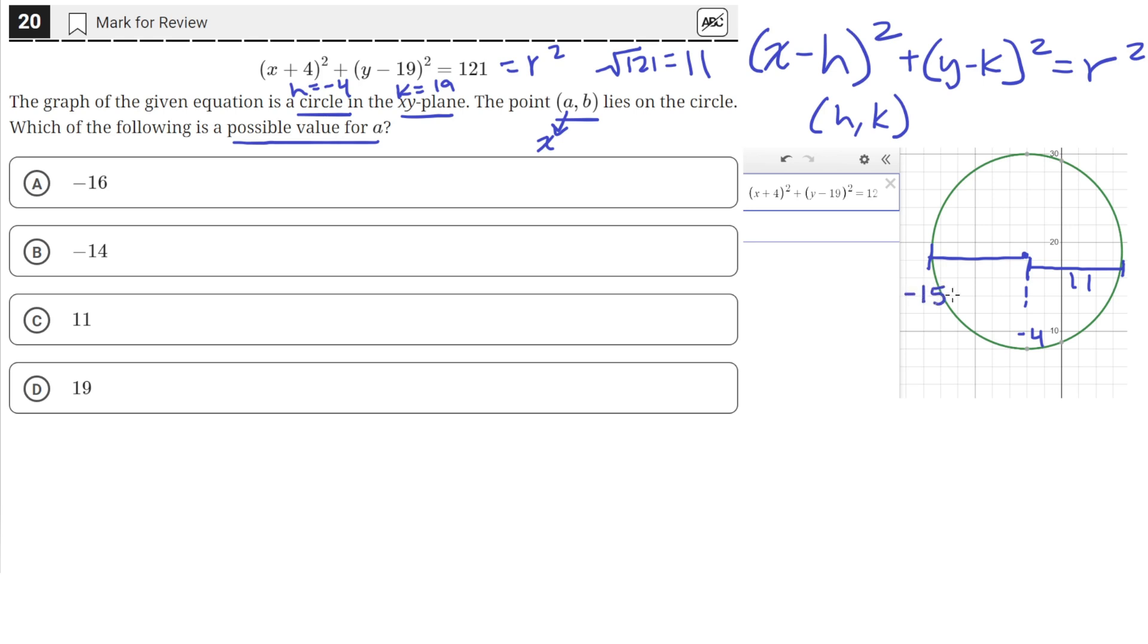On the right side, since we're at negative 4, this coordinate has to be 7. So the possible x values on this circle range from negative 15 to 7. The x values, or the a values—in this case we're using a,b for coordinates—have to be between negative 15 and 7.